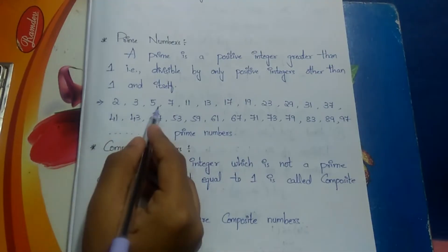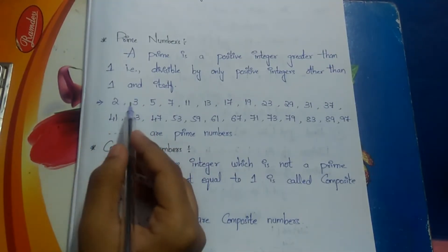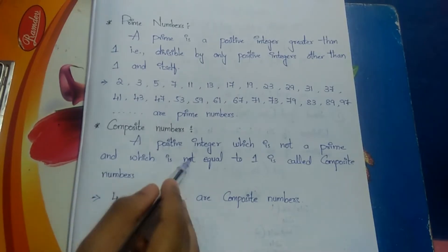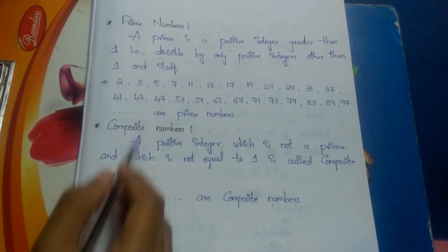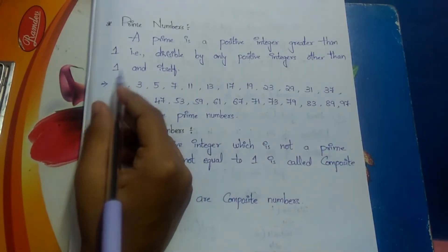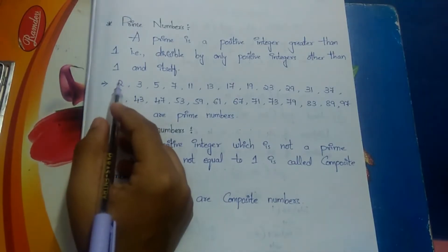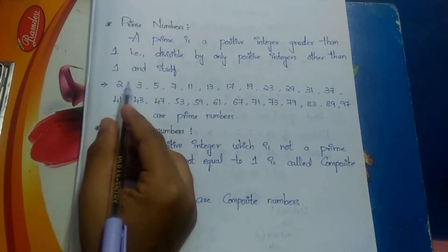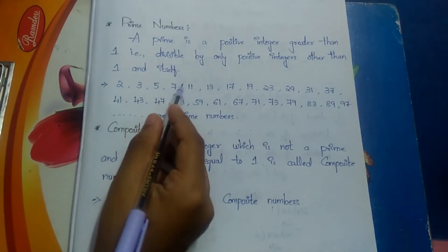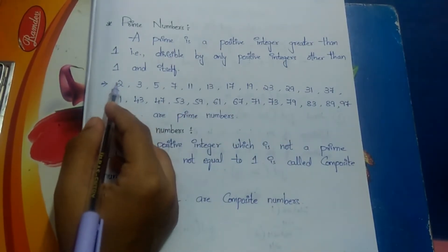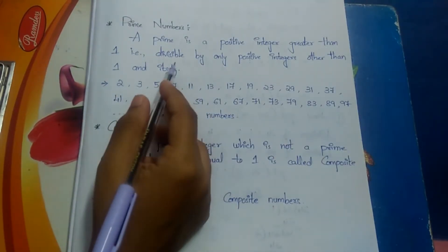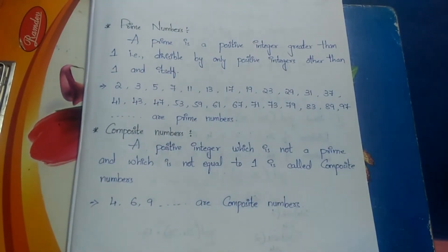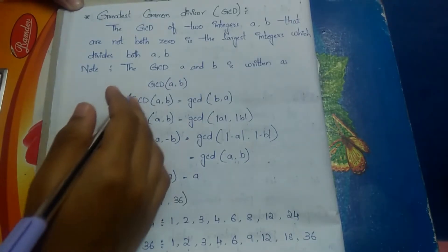These prime numbers are divisible only by one and themselves. A composite number is a positive integer which is not a prime number and which is not equal to one. The numbers not listed as prime — such as 4, 6, 8, 9, 10, and so on — are composite numbers. Note that 1 is excluded from both categories.